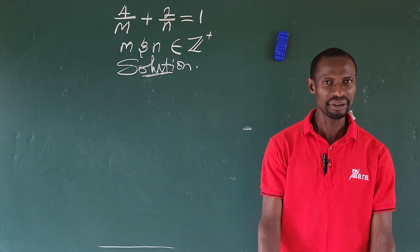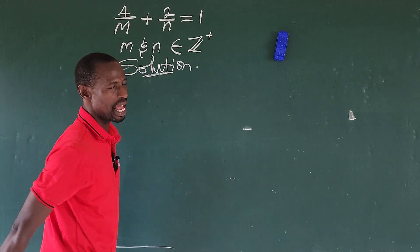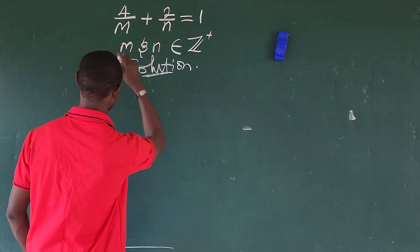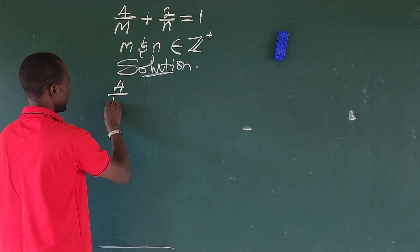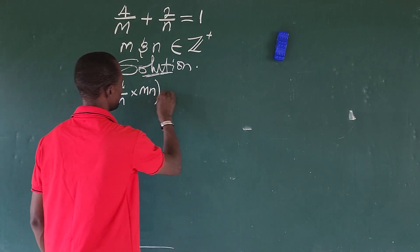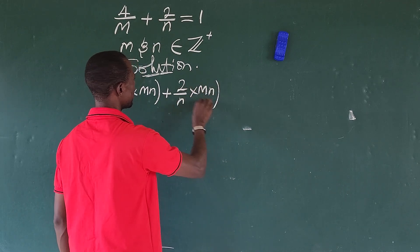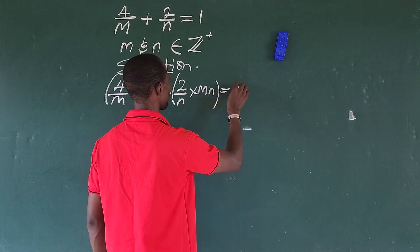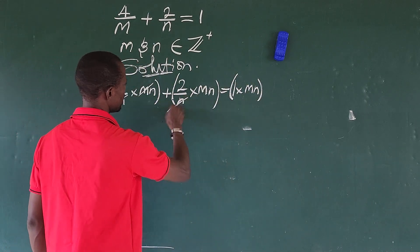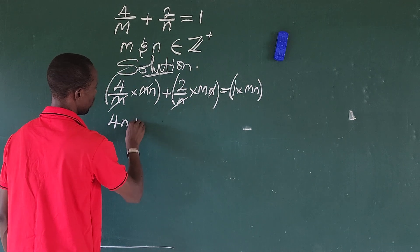Let's take our question here. We find the LCM of the system, and the LCM is mn. So we multiply both sides by that LCM. We have 4 times mn over m plus 2 times mn over n, equal to 1 times mn. This simplifies — the m cancels here and the n cancels there.